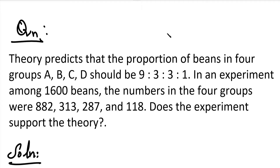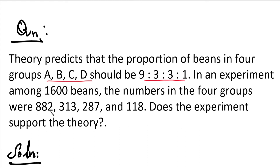We choose a question. In the question, theory predicts that the proportion of beans in four groups A, B, C, D should be in the ratio 9 is to 3 is to 3 is to 1. In an experiment among 1600 beans, the numbers in the four groups were 882, 313, 287 and 118. Does the experiment support the theory?